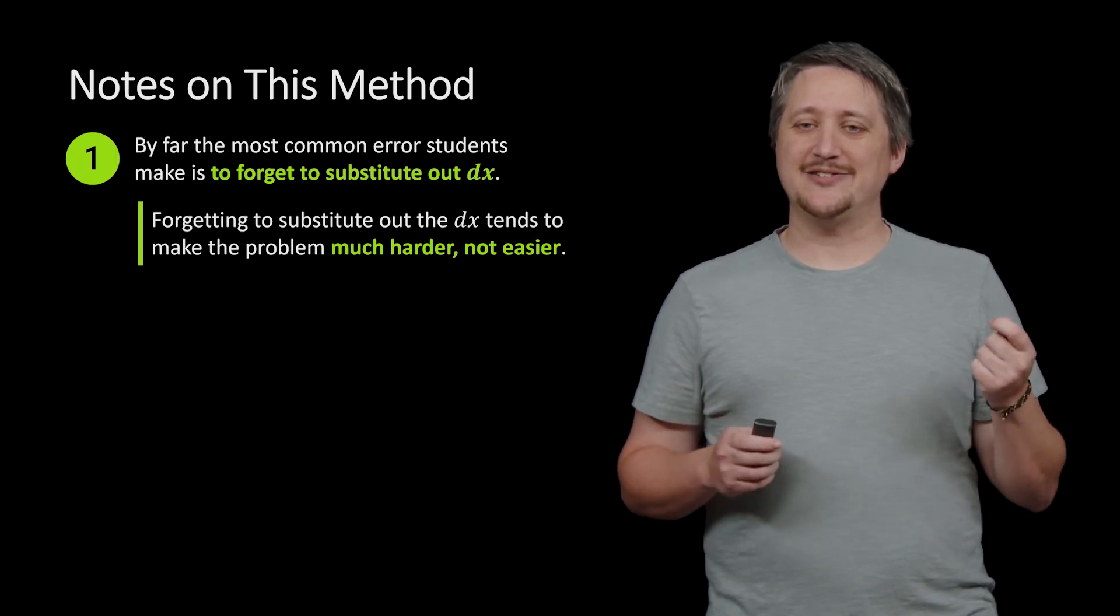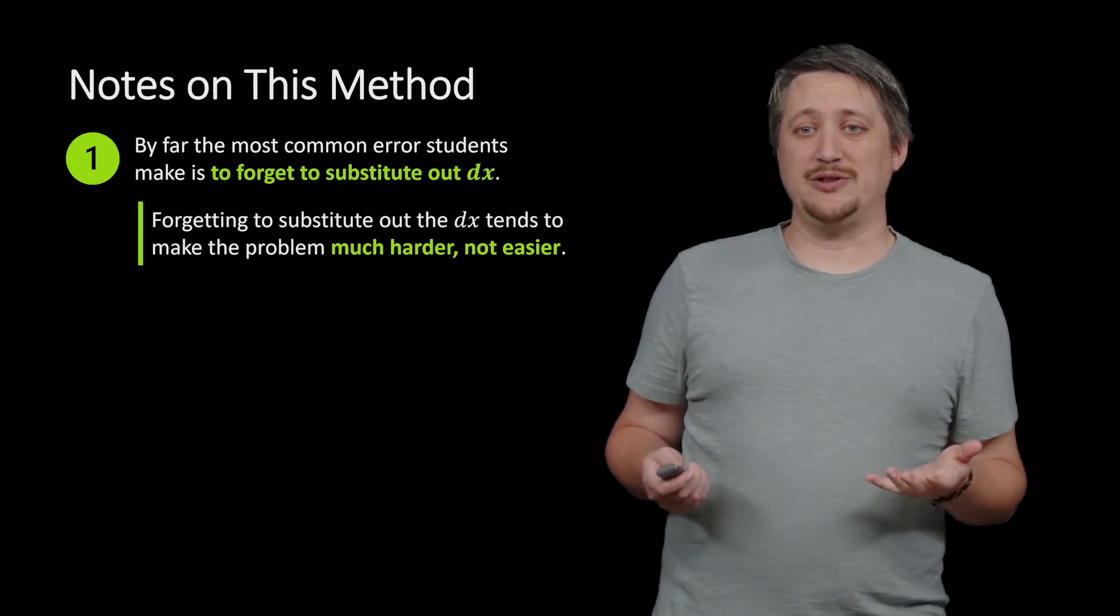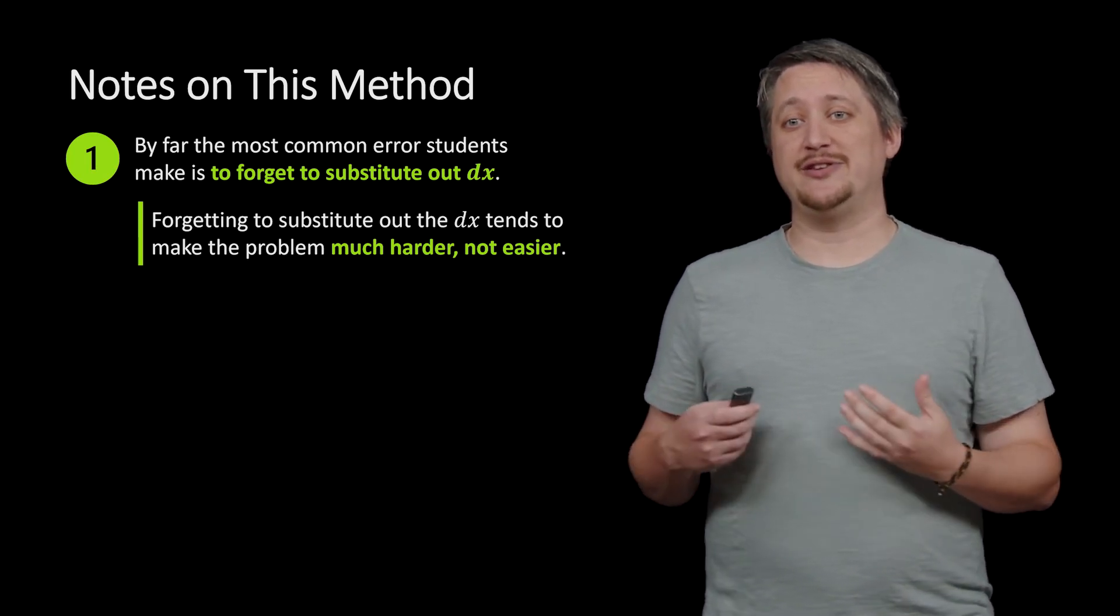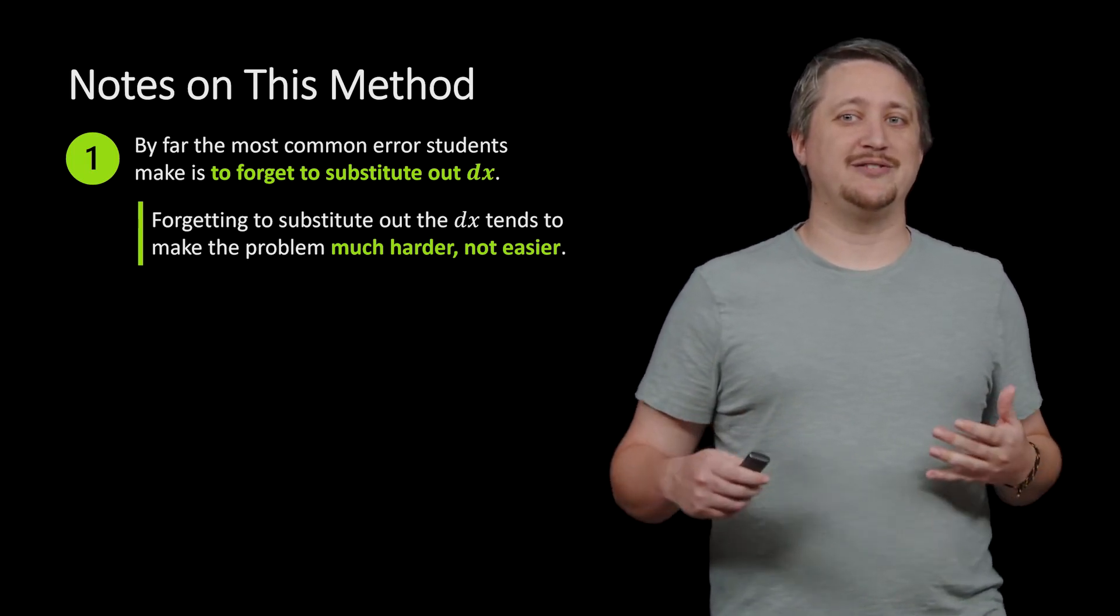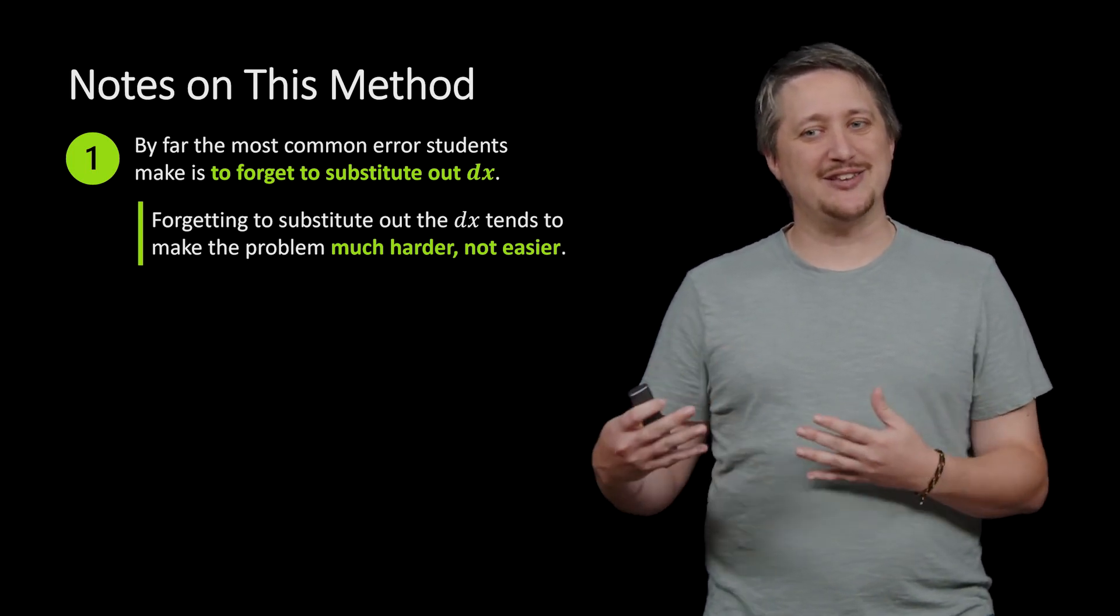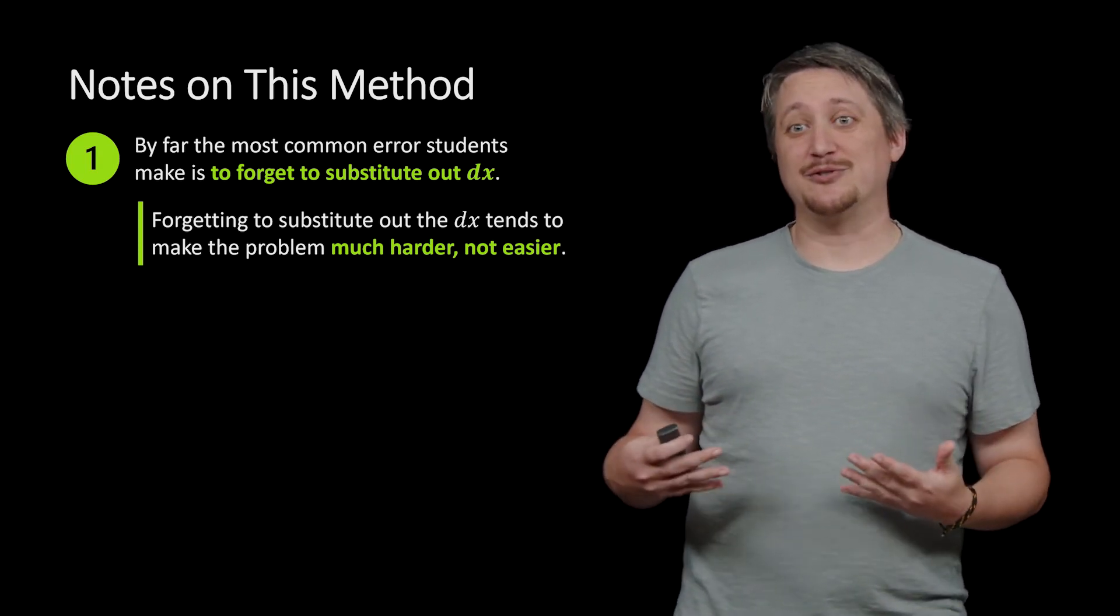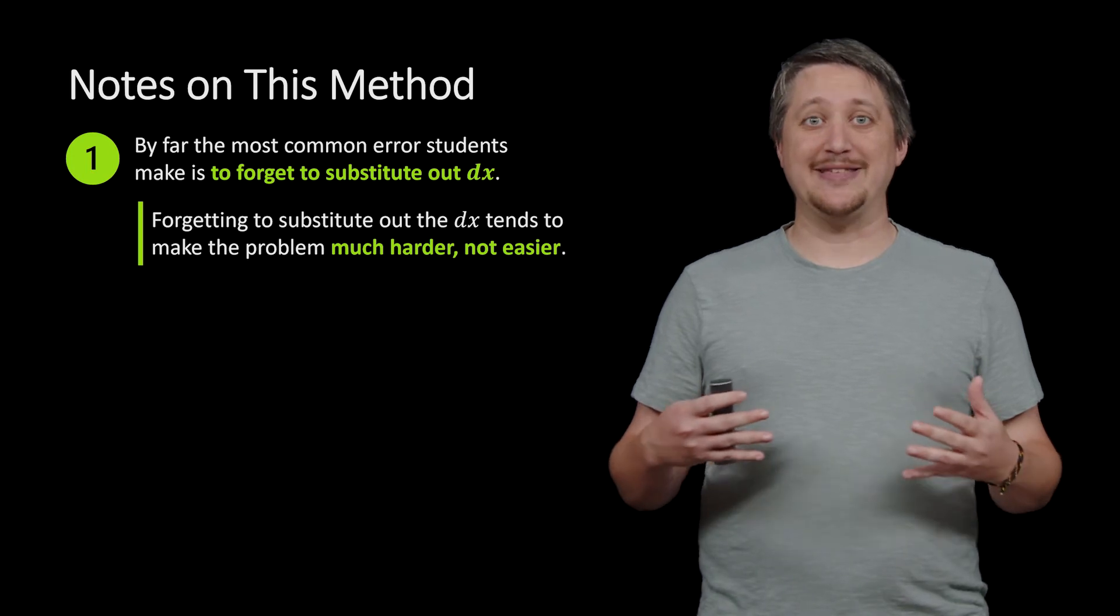But the thing is, forgetting to do that tends to make the problem way harder. If I hadn't subbed out the du in the previous thing, I'd still have that 2x out front and that would block me from doing the integral. So actually remembering to substitute out the dx tends to make the problem much easier, not harder. So it's almost a self-fulfilling prophecy here that if you forget to do that, it becomes almost impossible to solve, which then makes you go back and look for an error. So it's a good idea to make that mental check.